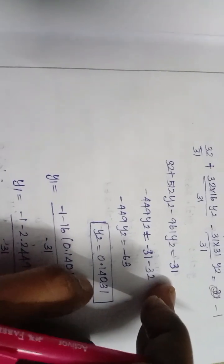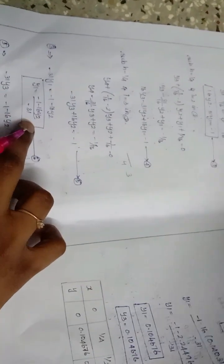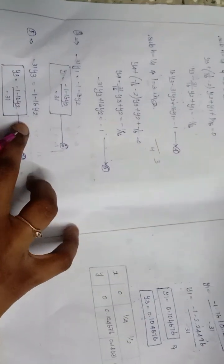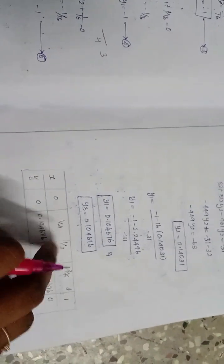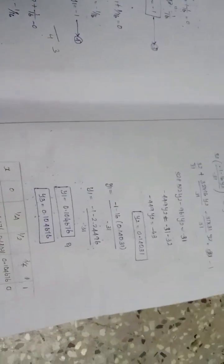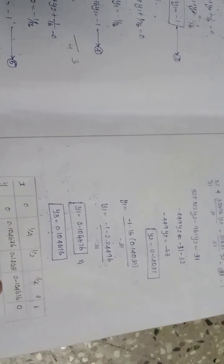Substituting y₂ back into equation 3 gives y₁ ≈ 0.104676, and substituting into equation 5 gives y₃ ≈ 0.104676. The final tabulated values are: x = 0, y = 0; x = 1/4, y ≈ 0.104676; x = 1/2, y ≈ 0.14031; x = 3/4, y ≈ 0.104676; x = 1, y = 0. Hope you all understand, thank you.